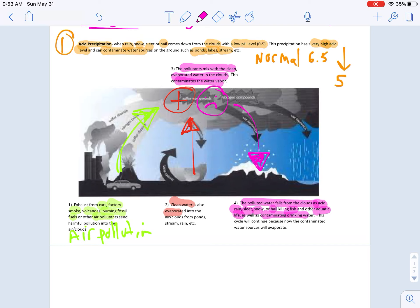So these are the four steps on how acid rain falls. The pollutants mix with clean water vapor and they fall down as acid rain, snow, sleet, or hail. So this is one of the long-term negative effects of pollution.